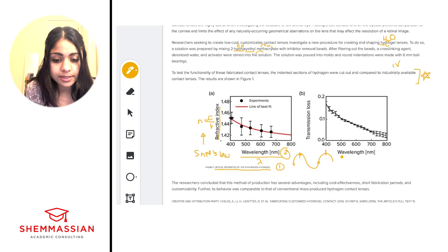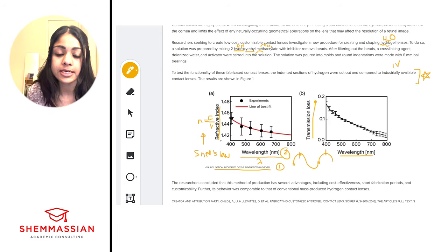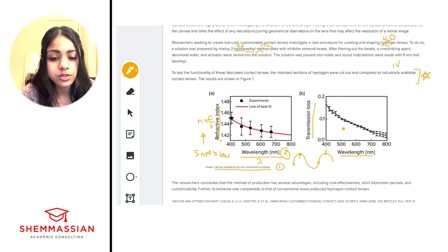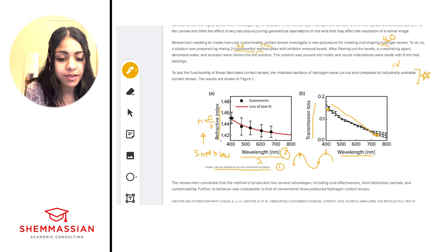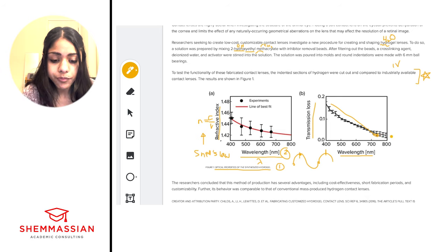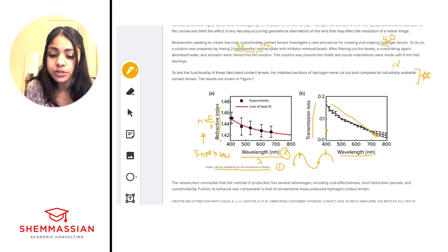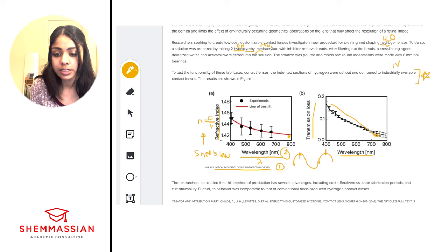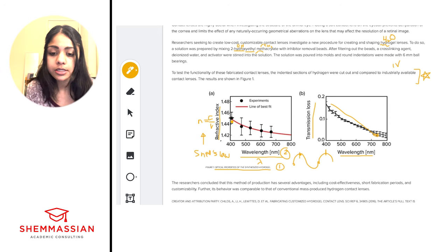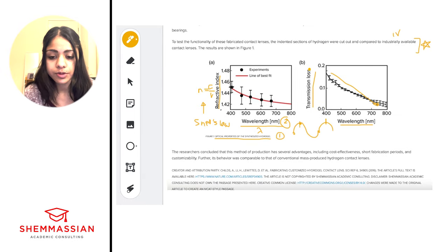The second graph also has wavelength on the x-axis, with transmission loss on the y-axis — basically the loss of intensity as light moves through a medium or away from the source. We see a similar downward trend: as wavelength increases, transmission loss decreases. You don't need to calculate the slope, but you should be able to discern relative trends — positive or negative correlation. Note that neither graph is exactly linear; there is a curve to both.